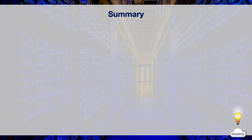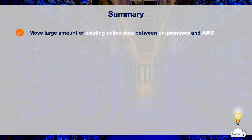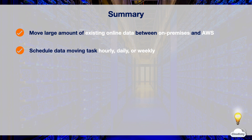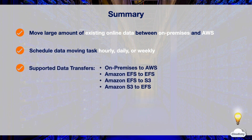In this episode, we've learned AWS DataSync. You can use DataSync to automate and accelerate moving large amounts of existing online data between on-premises and AWS using a DataSync Agent. When you configure DataSync, you can schedule data moving tasks on an hourly, daily, or weekly basis. DataSync supports data transfer from on-premises to AWS, from Amazon EFS to EFS or S3, and from Amazon S3 to EFS.